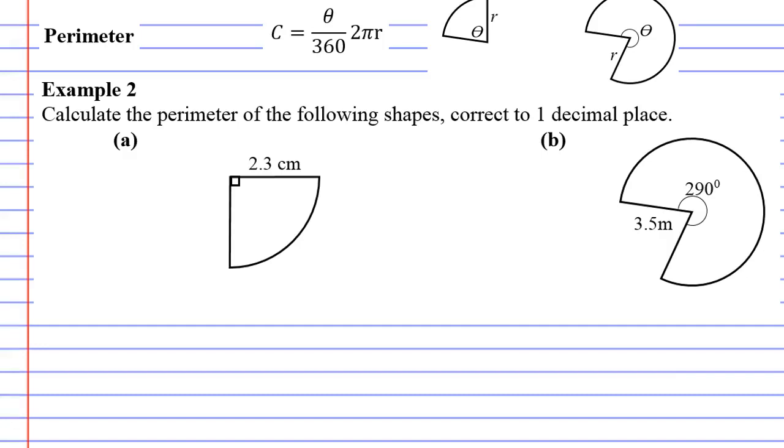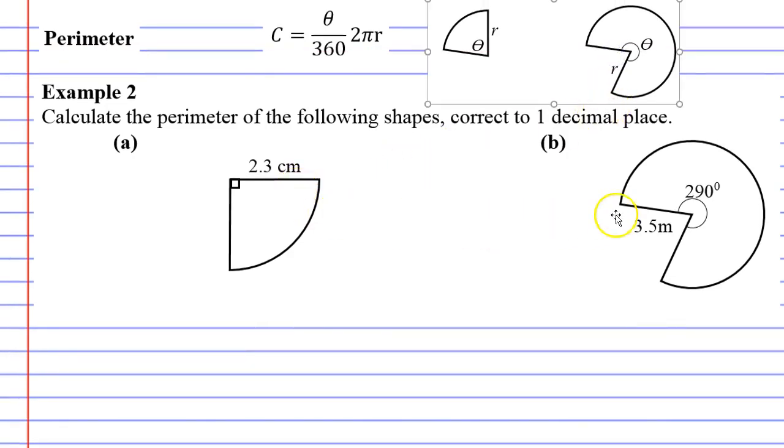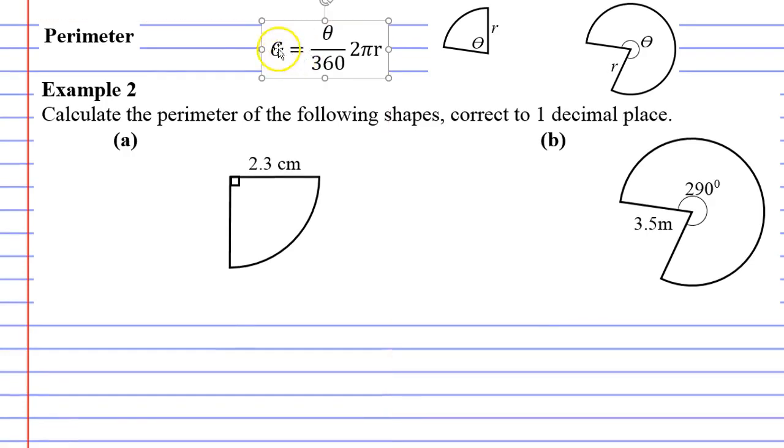We're up to example 2 in perimeter. In this one, we're looking at sectors. I want to point out that we're talking about perimeter, yet the formula uses the word C instead of perimeter, which some of you might not know about.